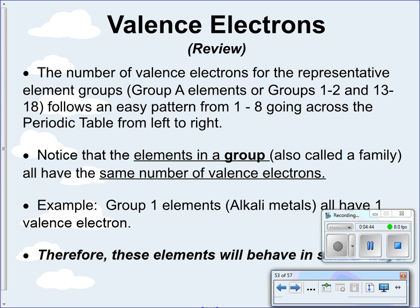As a review: the number of valence electrons for representative element groups — group A elements, or groups 1 through 2 and 13 through 18 — follow the easy pattern from 1 to 8 across the periodic table. Elements in one column, also called a family, all have the same number of valence electrons. For example, group 1 — hydrogen, lithium, sodium, potassium, rubidium, cesium, and francium — they all have one valence electron and will all behave the same way.